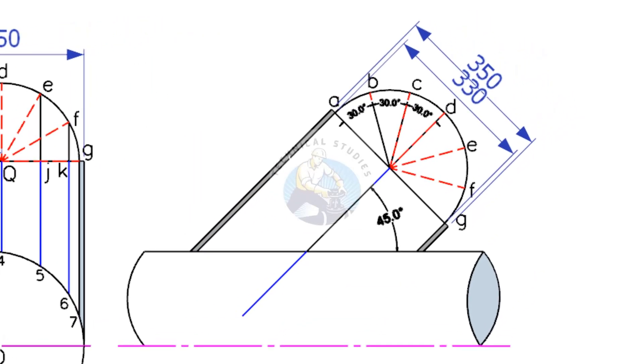Draw the side view of the layout as shown. You can mark the layout as per the required angle. Here I mark 45 degrees only for example.